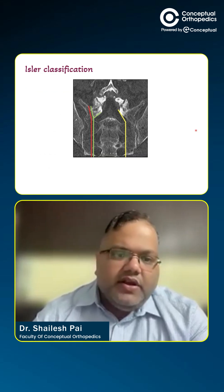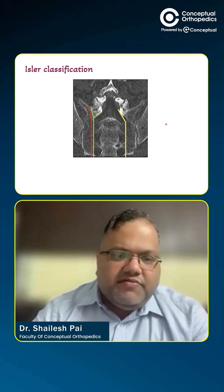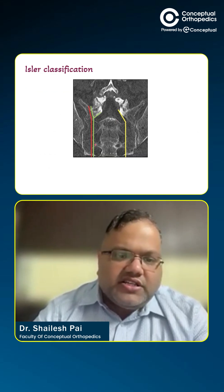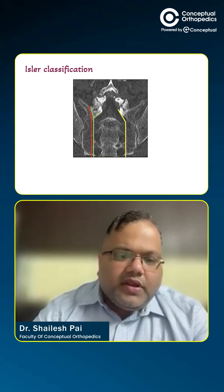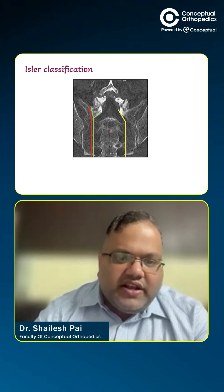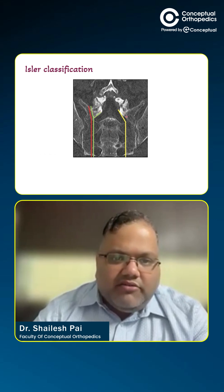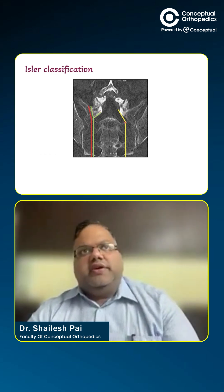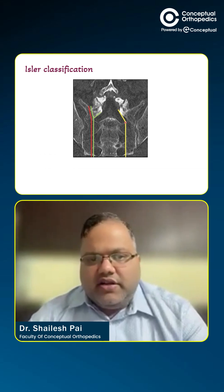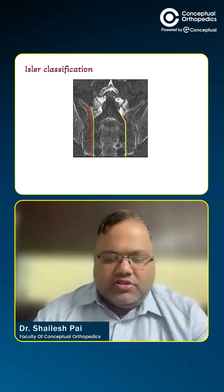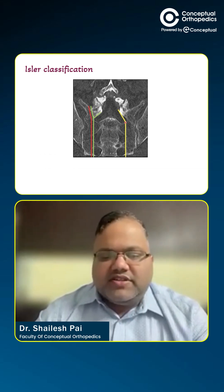There are three types. Type 1 is a vertical fracture line anywhere in the sacrum that goes lateral to the facet joint of S1. In Type 2, it goes at the level of the facet joint. In Type 3, it goes medial to the facet joint. Type 3 carries the worst prognosis, followed by Type 2, and Type 1 has the best prognosis.